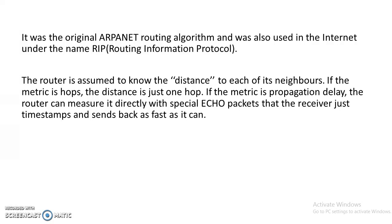The router is assumed to know the distance to each of its neighbors. If the metric is hops, the distance is just one hop. If the metric is propagation delay, the router can measure it directly with special echo packets that the receiver timestamps and sends back as fast as it can.